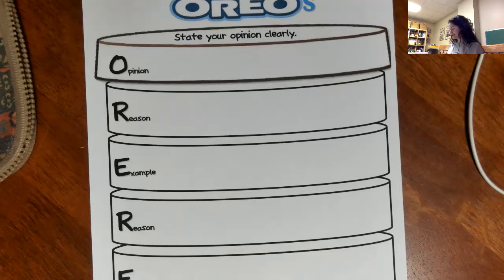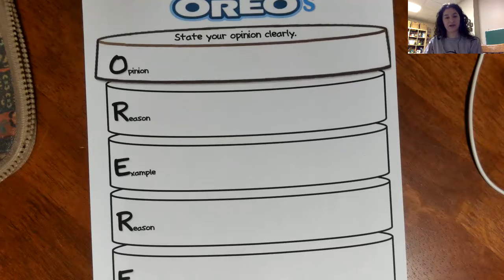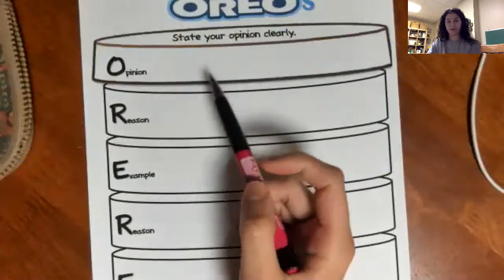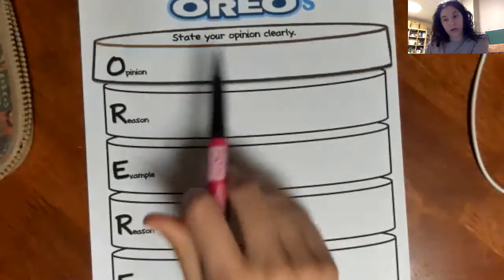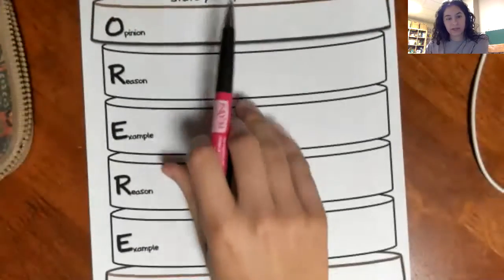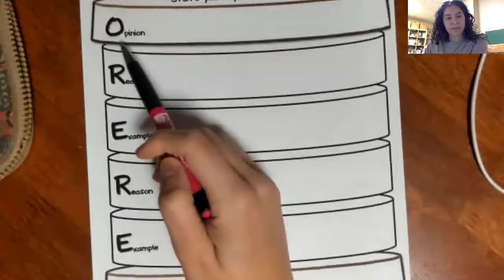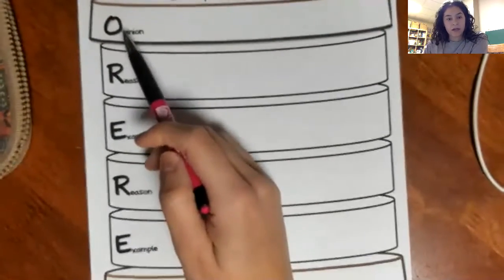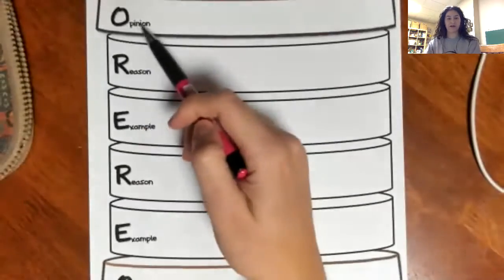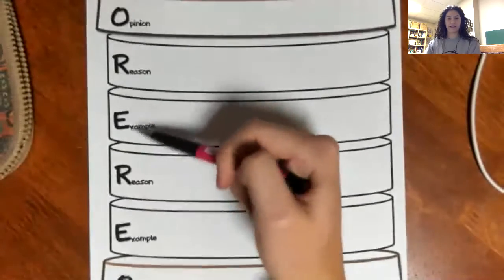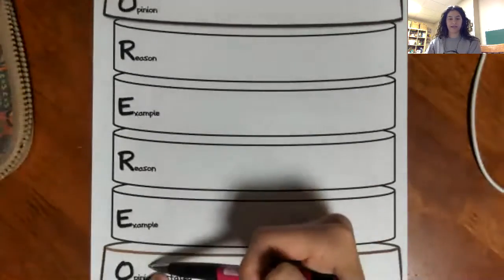It asks: do you think a monkey would make a good pet? Why or why not? So I think this might help us plan out what we're doing. This is how it works really quickly: we call it Oreo writing because it's O-R-E-O.